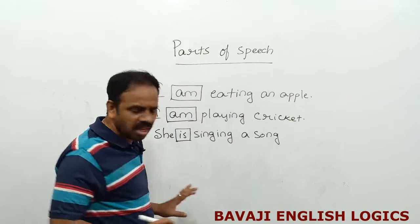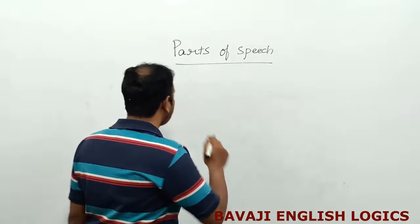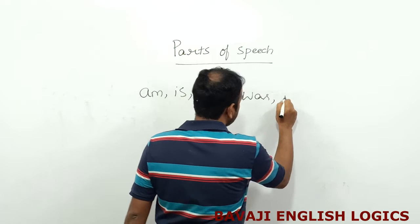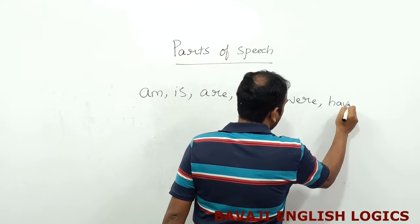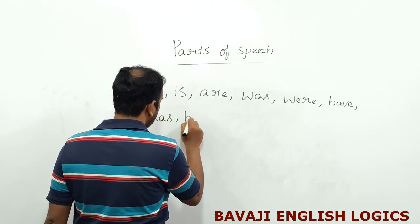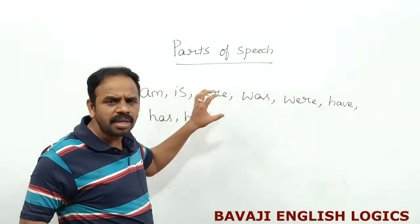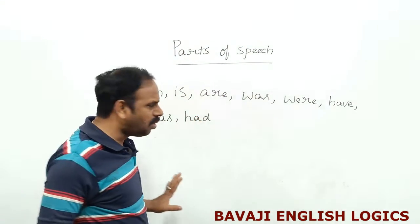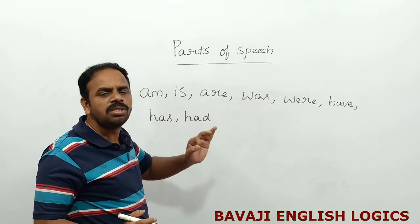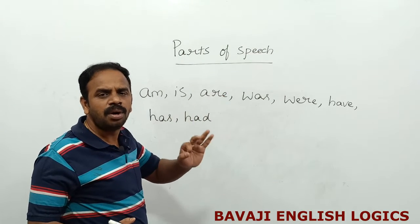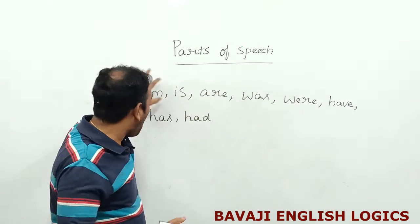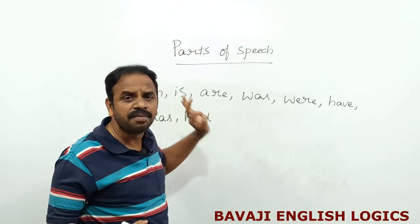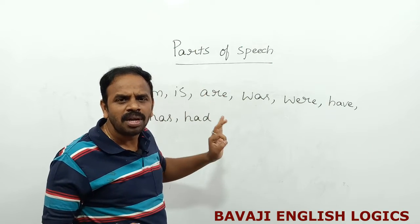Now coming to auxiliaries like am, is, are, was, were, have, has, had — they support the main verb in framing the meaning and also indicate the tense and mood. These auxiliary verbs can also be used independently without the main verb. Please keep this point: am, is, are, was, were, have, has, and had can be used without a main verb.